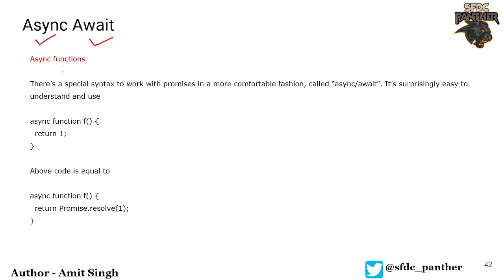Async functions are a special syntax to work with promises. In the previous video when we talked about chaining promises, there were multiple issues — like calling a promise inside another promise, and then if there's another promise we have to call .then again, which creates a kind of callback hell problem we discussed. To resolve that, there is a new way called async/await, which is very easy to understand, easy to use, and easy to read — a very easy thing to learn and implement as a developer.